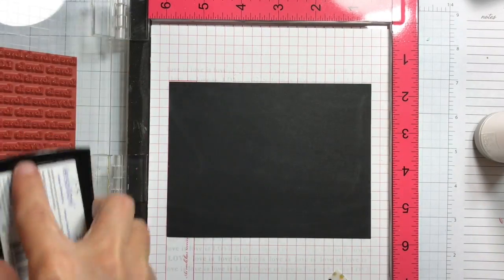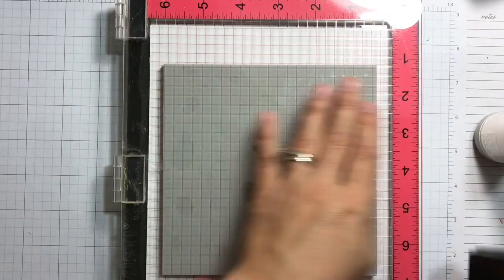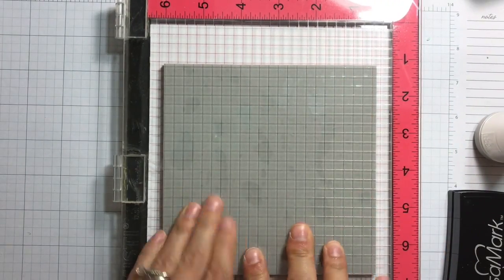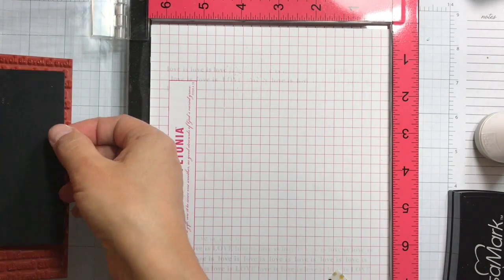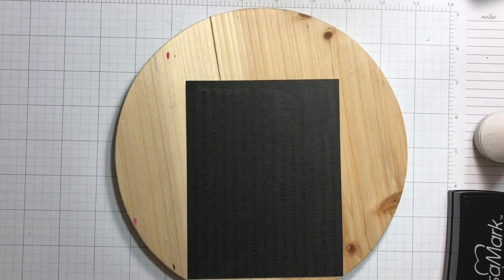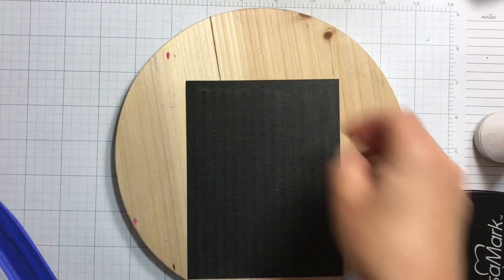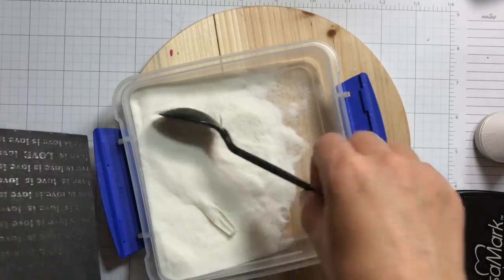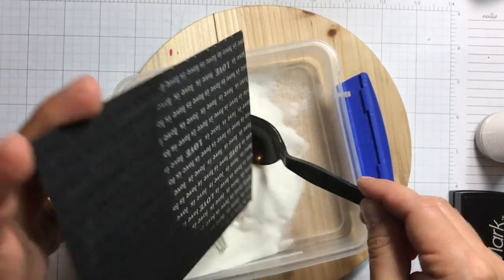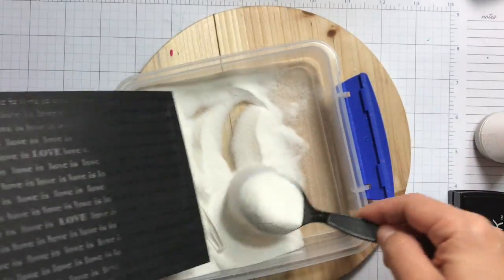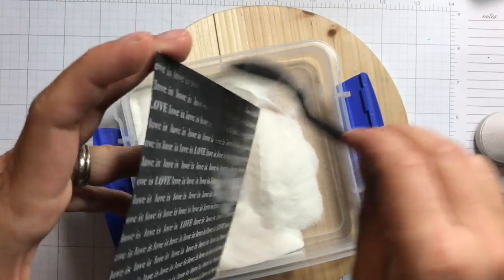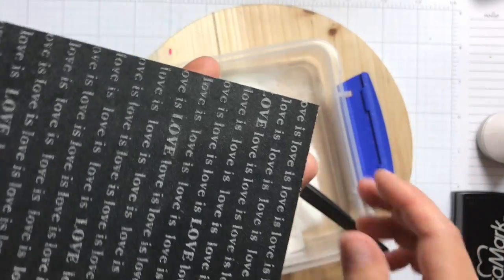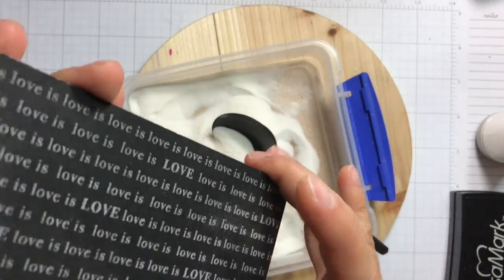This time I want to emboss with clear embossing powder—ultra-refine clear embossing powder from Hero Arts. I'm just making sure that I have good coverage. I think that's pretty good.